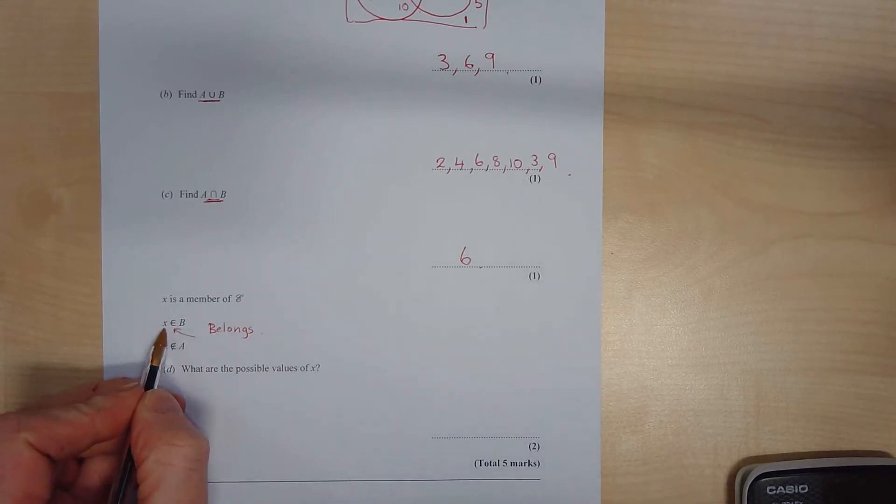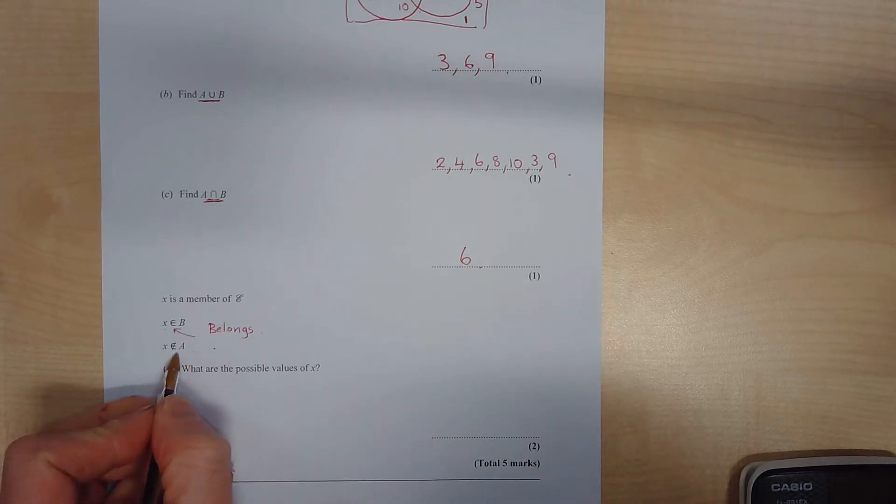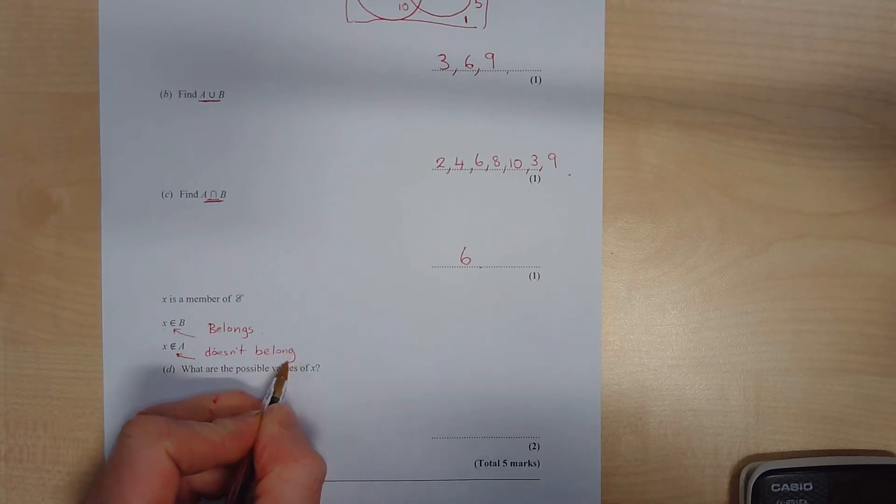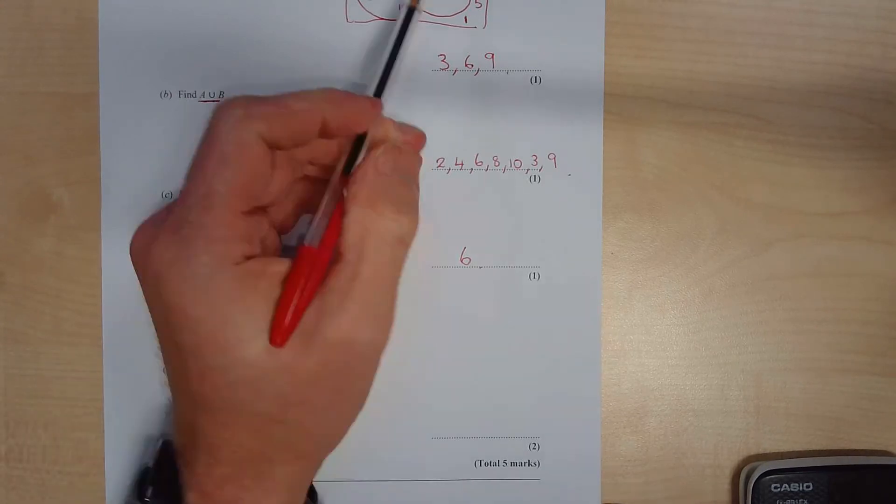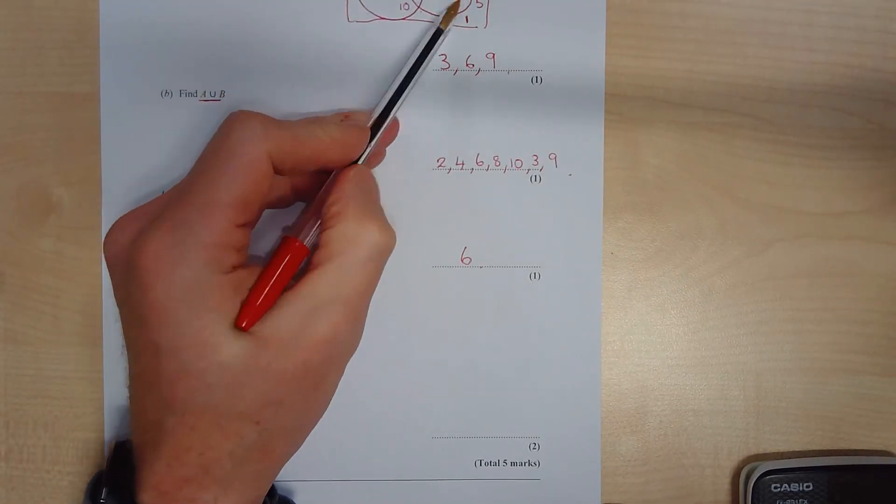Right, for this last bit, this means belongs to. So this is saying there's a number x and it belongs to B, and this one with the line through means it doesn't belong.